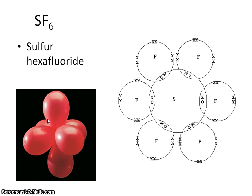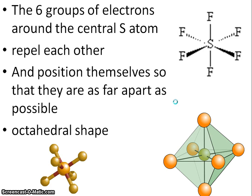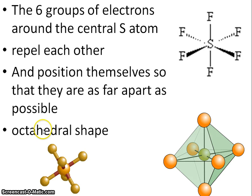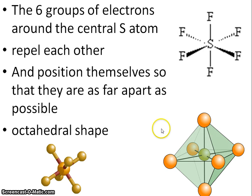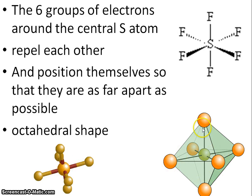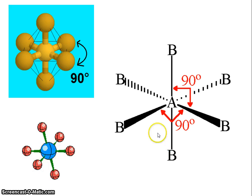Moving on to sulfur hexafluoride. From the dot-cross diagram, you can see there are 6 groups of electrons around the sulfur atom. They're going to repel each other according to electron pair repulsion theory, and we get an octahedral shape. This is a little surprising because we're dealing with 6 electron groups, and octahedral does suggest 8 — but that's because joining the points of the molecule gives an 8-sided figure. All bond angles in this case are 90 degrees.